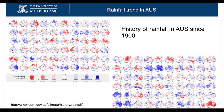This rainfall slide looks like a mess. Blue is getting wetter, red is a year when it wasn't as wet. Looking at it the same way, you can't really see a trend. There's a drier year up here and a very wet year in 1956.